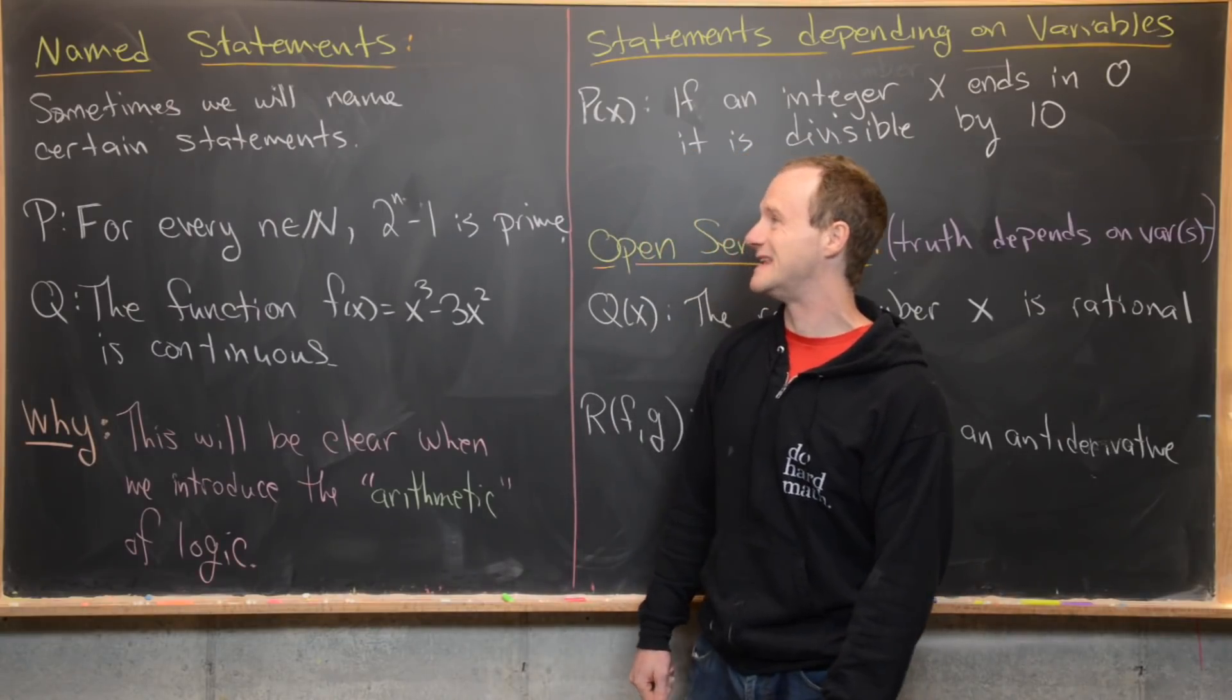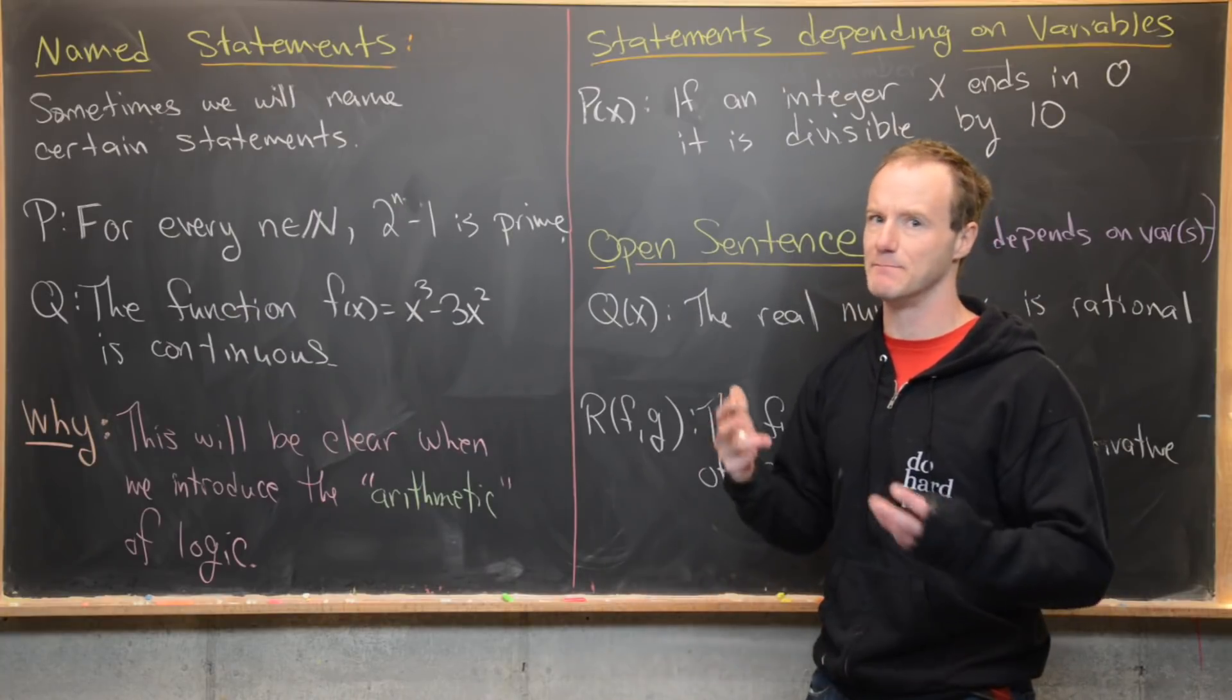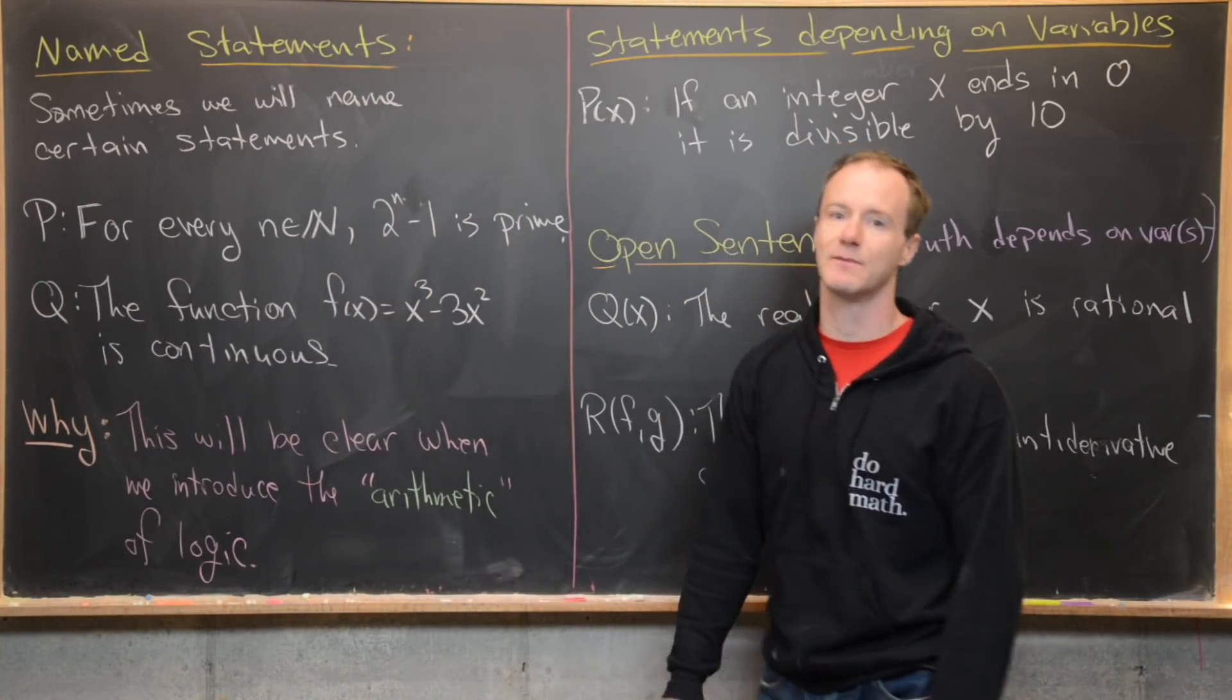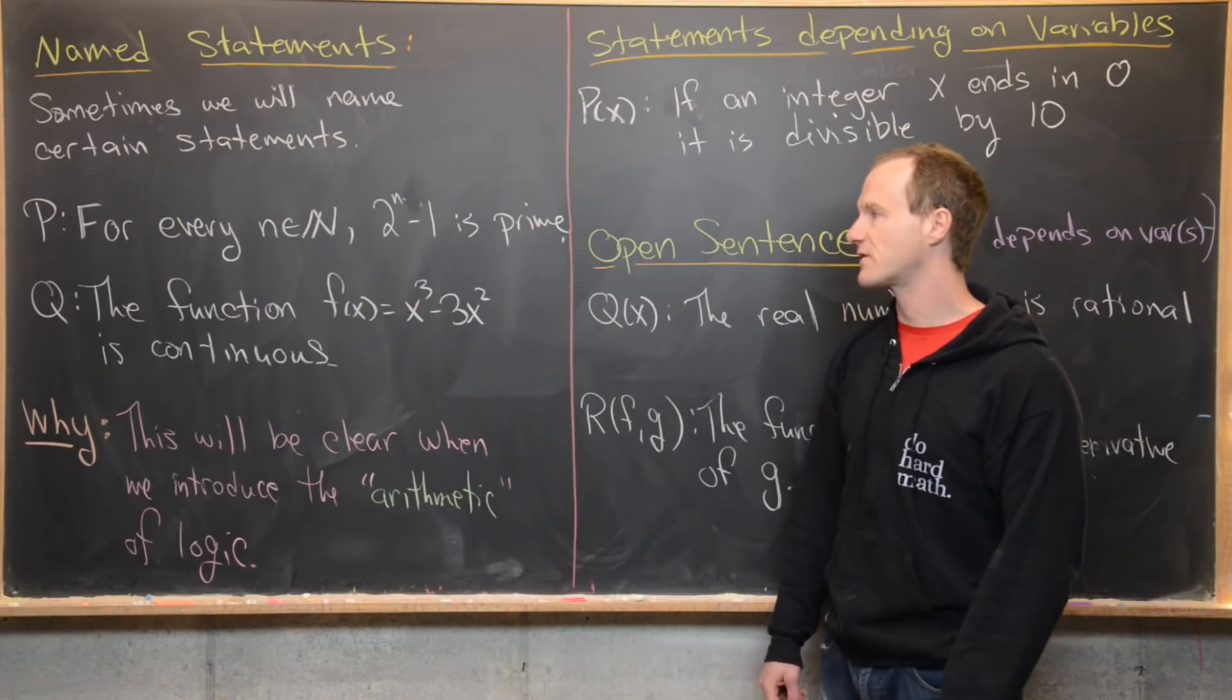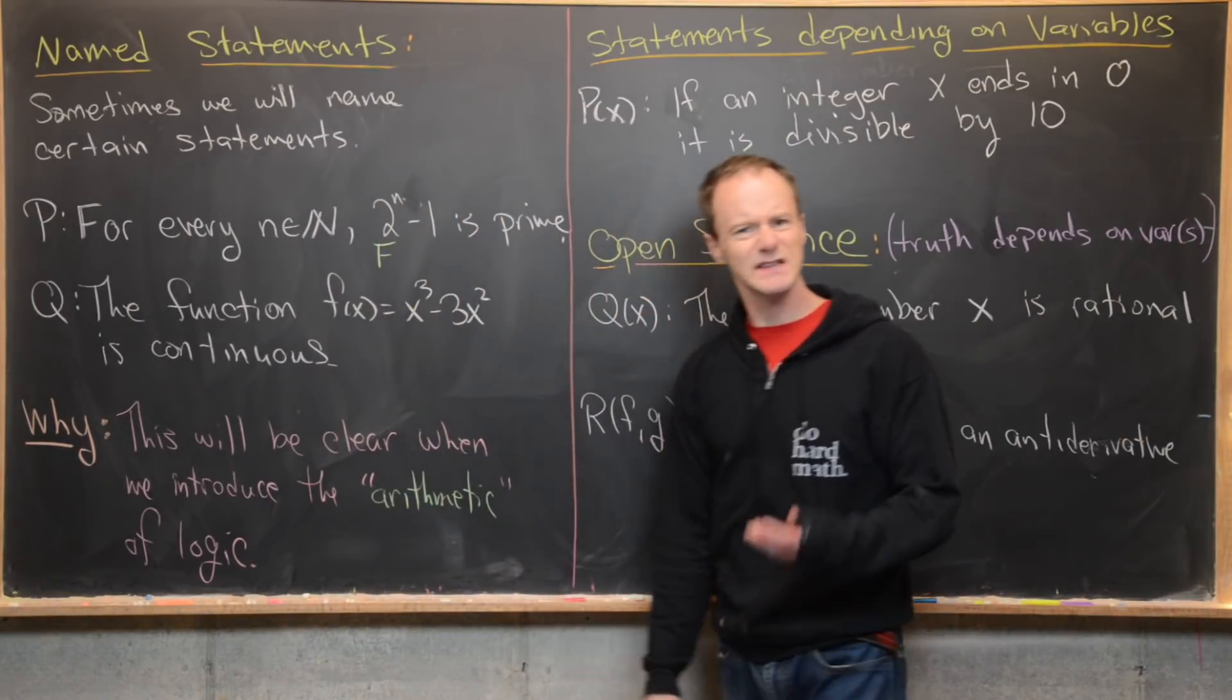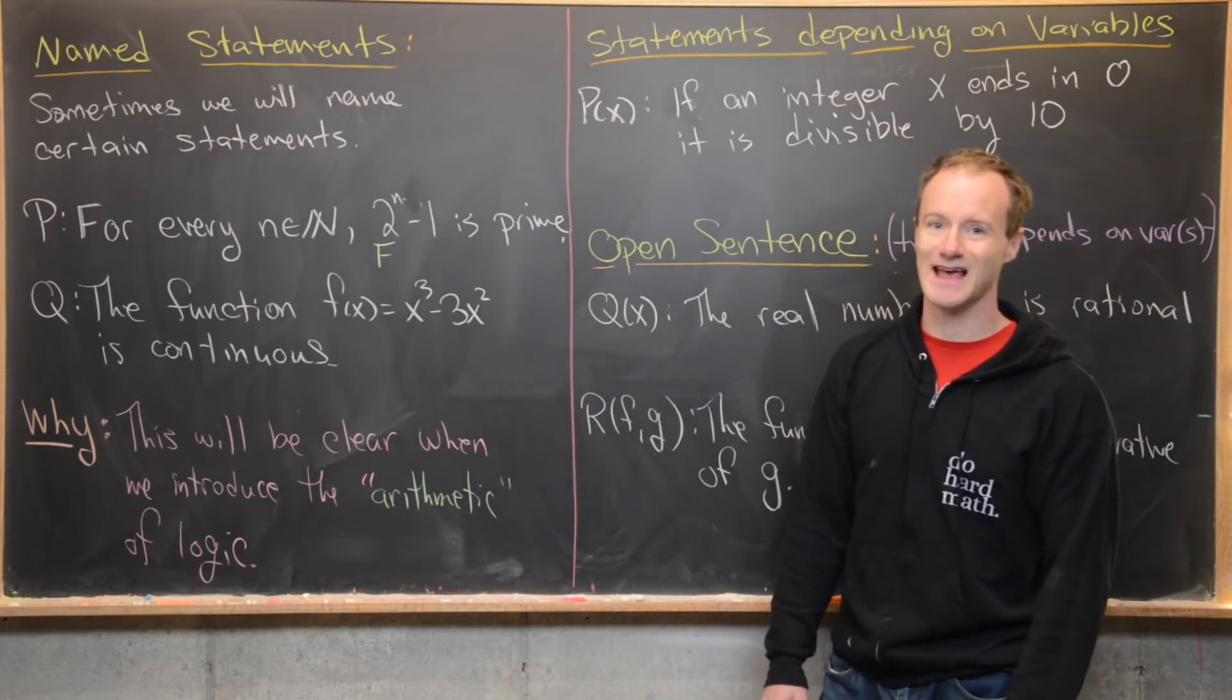Let's look at the notion of a named statement. Sometimes we'll want to name certain statements, and we'll usually use capital letters from the middle of the alphabet for those names. Here's a statement P, which says for every natural number n, two to the n minus one is prime. That's most definitely a statement, and notice we've given it the name P. But this statement is false. This is well known. Primes that are of this form are called Fermat primes, but you don't have to go very far to get a counterexample here.